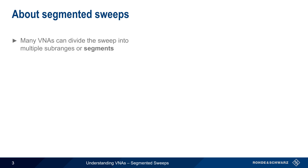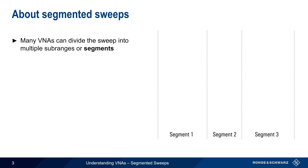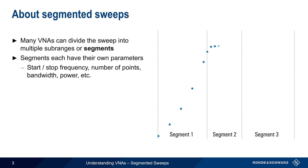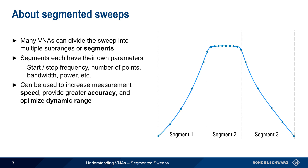Many VNAs can, however, divide the sweep range into multiple sub-ranges or segments. Segments are smaller frequency ranges within the total frequency range. Each segment has its own measurement parameters, meaning that the start and stop frequency, number and spacing of points, bandwidth, power, etc. can be set differently for each segment. Using segments can increase measurement speed, provide greater accuracy or resolution, and can be used to optimize dynamic range.